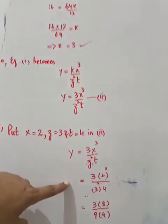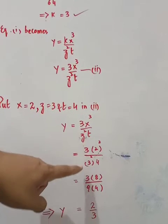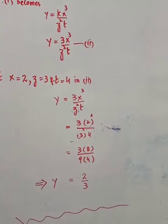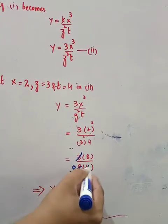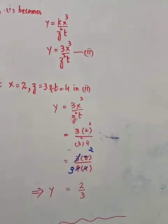If you put the values, then the answer will come. 3 times 2 cubed over 3 squared times 4. Three cubed is 8, three squared is 9, so 3 times 8 over 9 times 4 equals 24 over 36, which simplifies to 2 over 3. That's the answer.